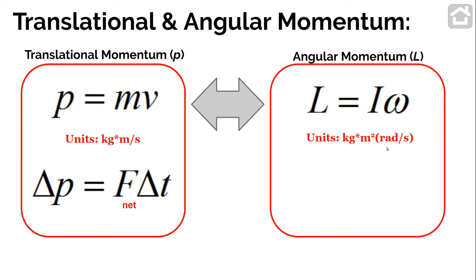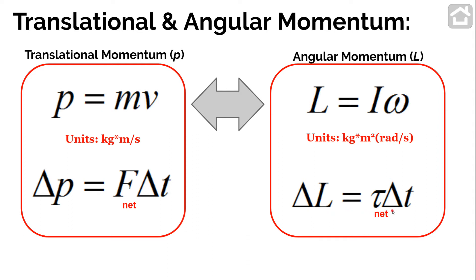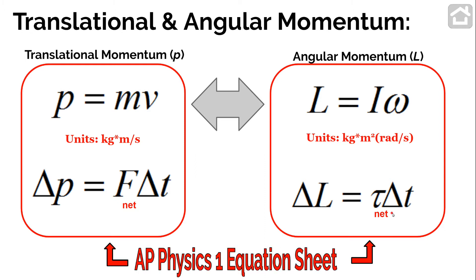The expression for how angular momentum changes is very similar to the linear case. Just as the change in P equals force times delta T, the change in L — the change in angular momentum — equals the net external torque multiplied by time. The torque must be applied outside the system. All four of these equations are on the AP Physics 1 equation sheet, so you don't need to memorize them.